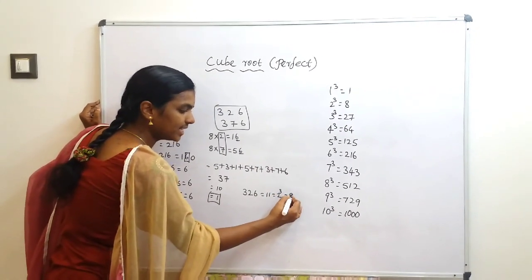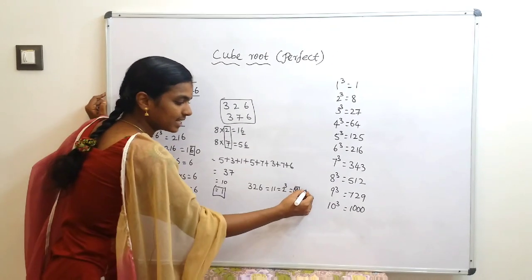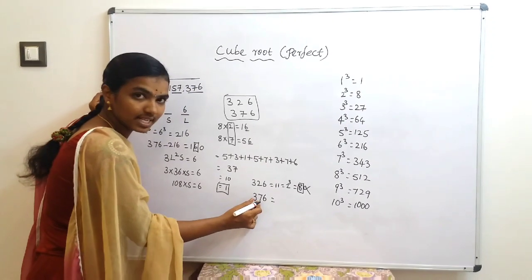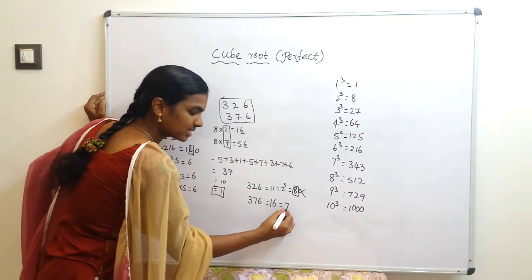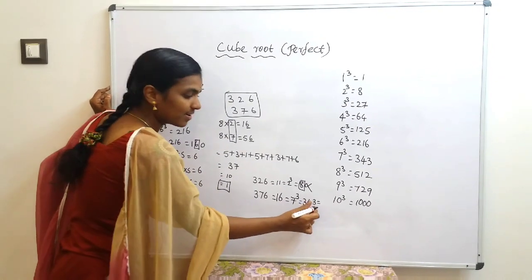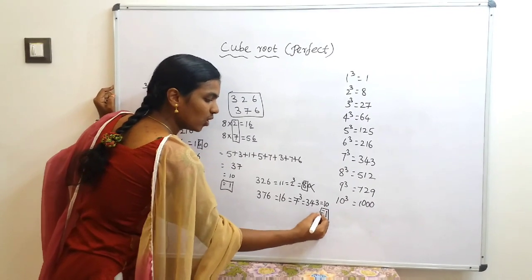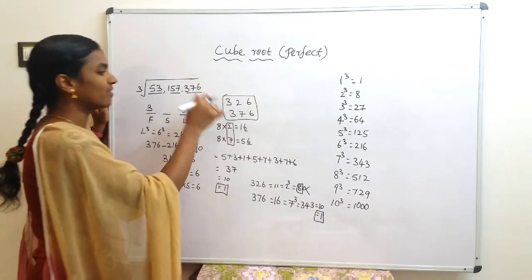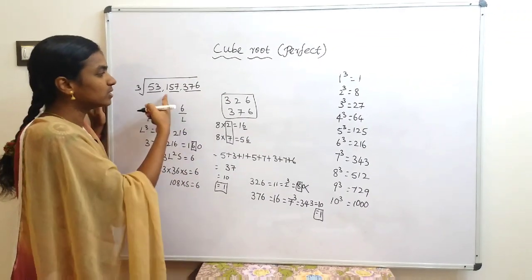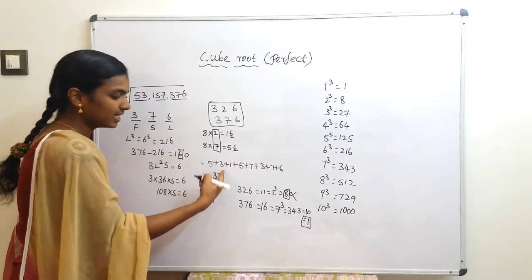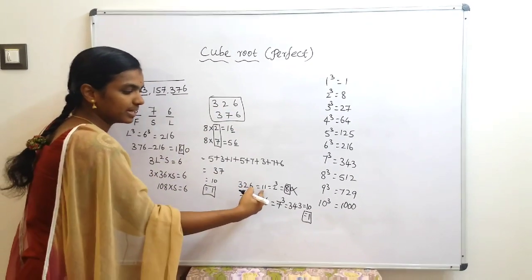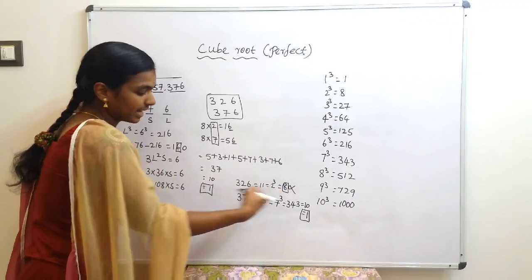Now check 376: 3+7+6 = 16 → 1+6 = 7; cube of 7 = 343 → 3+4+3 = 10 → 1+0 = 1. We get 1, which matches. So the answer is 376. If there are two or three possibilities, use the digital sum: sum the original number's digits down to a single digit, then check each possibility by cubing its digit sum until you get a match.